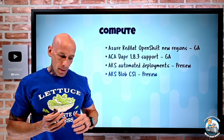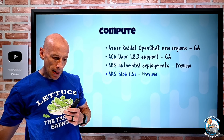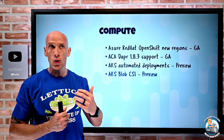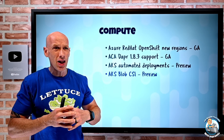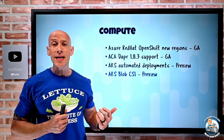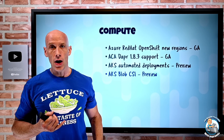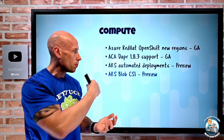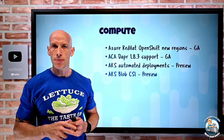AKS Blob CSI: through the container storage interface you can now mount blob storage via blob fuse or NFS 3.0, making it available to your pods. Maybe you have a large amount of data — log files or media. It gives you another option alongside Azure Files, managed disk, and Azure NetApp Files for durable storage for your Kubernetes-based workloads.